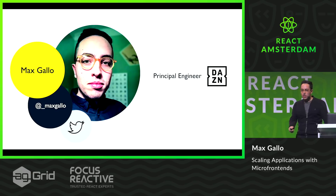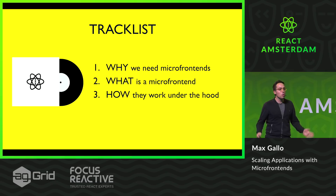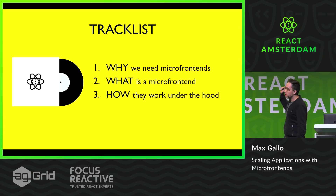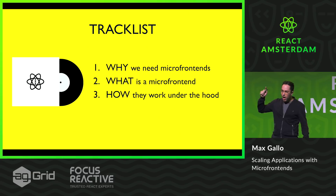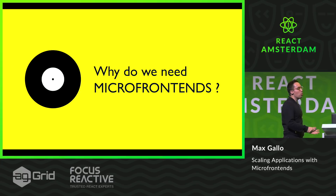This is the agenda — our track list for today has three main tracks. The first one is the why: why do we need micro frontends, what are the needs or the problems we wanted to fix? Then we have the what: what is a micro frontend physically — I want to touch files, I want to see code files. And then how they work under the hood, and how can I apply them.